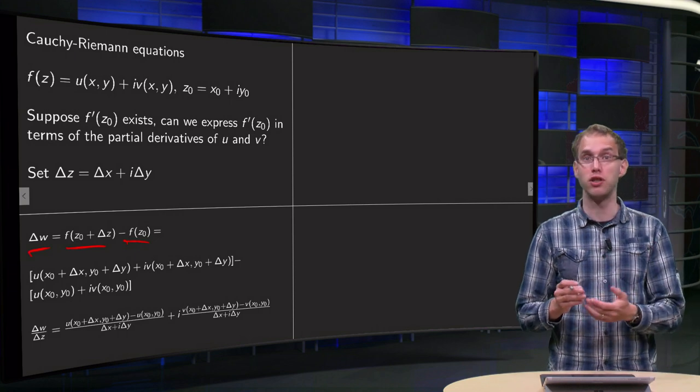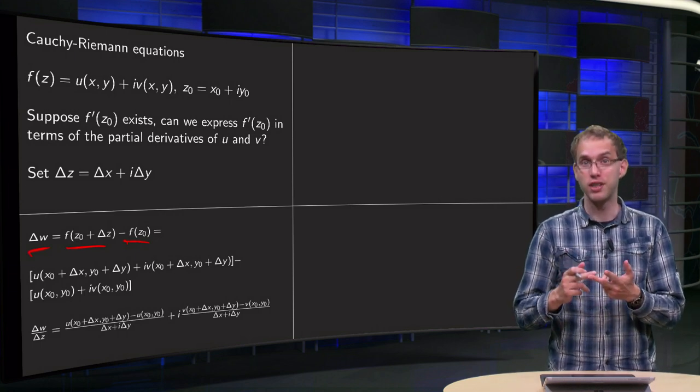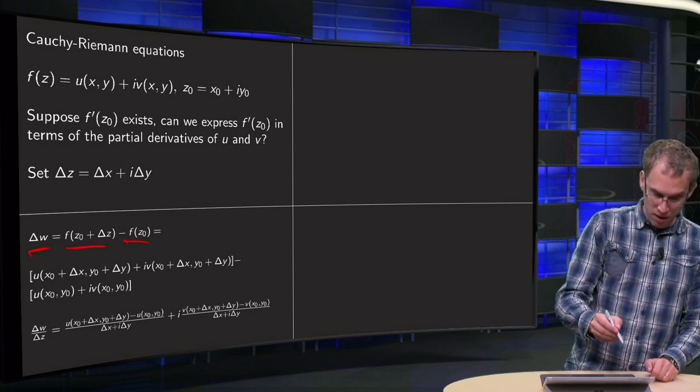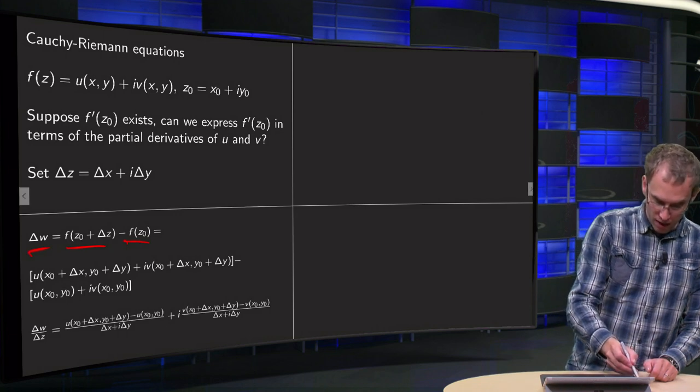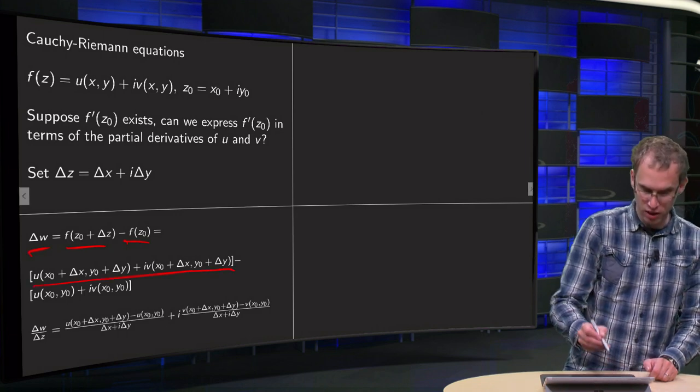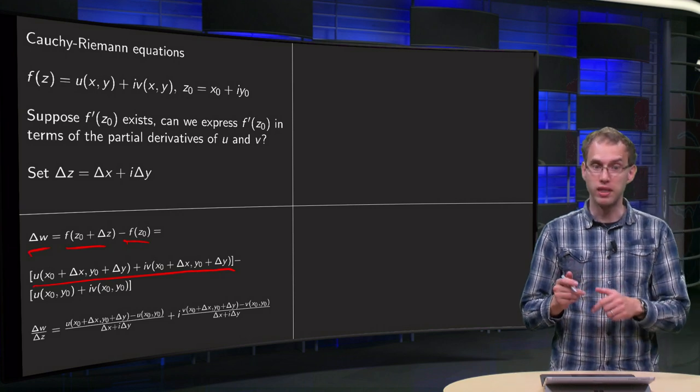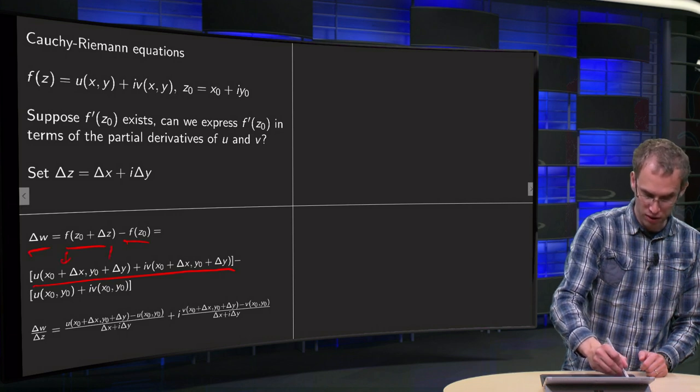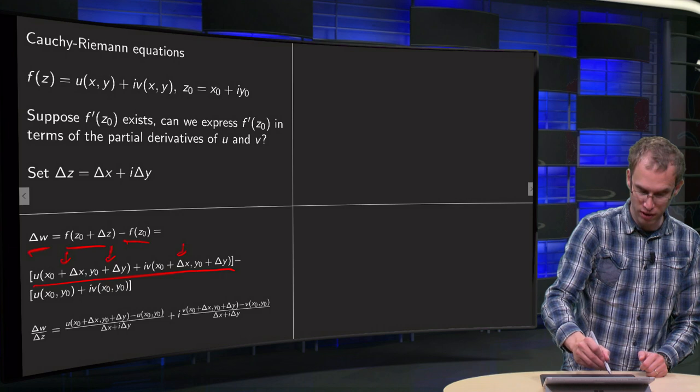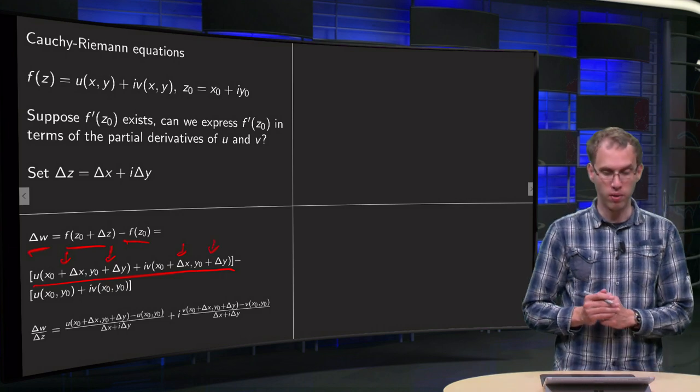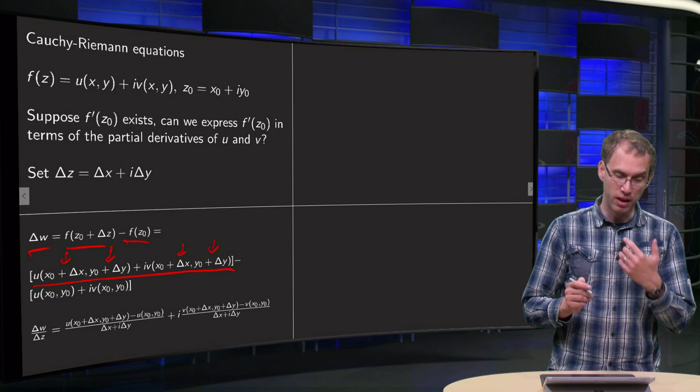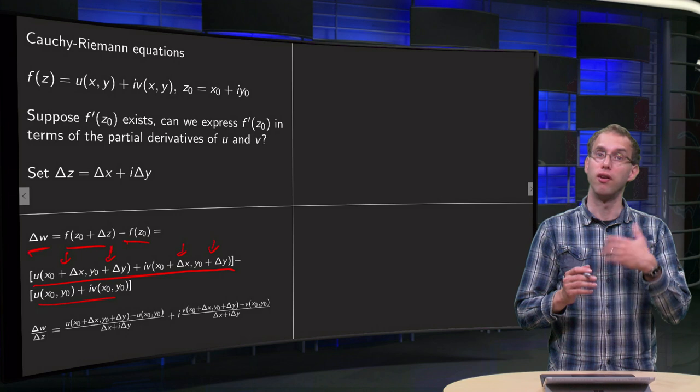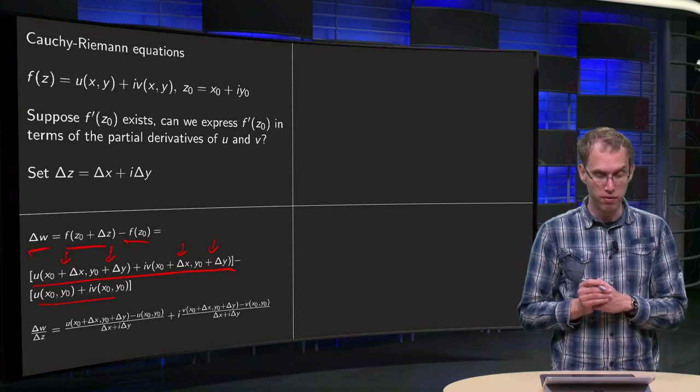If you express this in terms of u and v, x₀, Δx, y₀ and Δy, you get a big mess. But okay, here we have our f(z₀ + Δz) equals u plus i times v, and u has to be evaluated at (x₀ + Δx, y₀ + Δy) and v also has to be evaluated at (x₀ + Δx, y₀ + Δy). And then you have minus f(z₀), that's just u plus i times v now evaluated at (x₀, y₀) for both u and v.